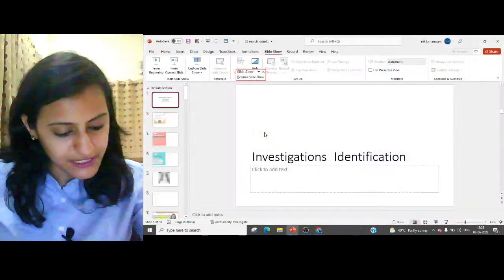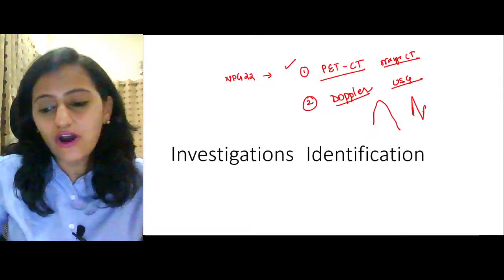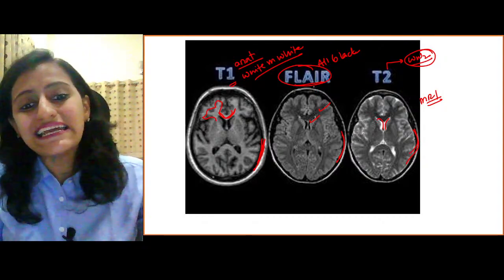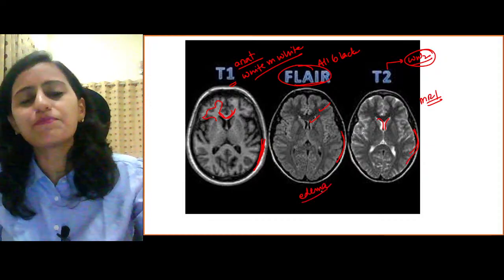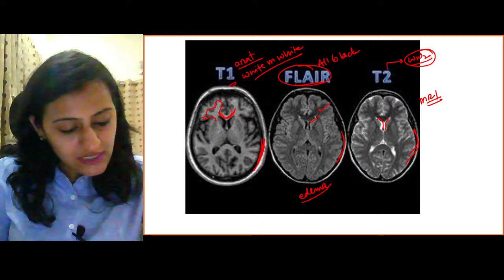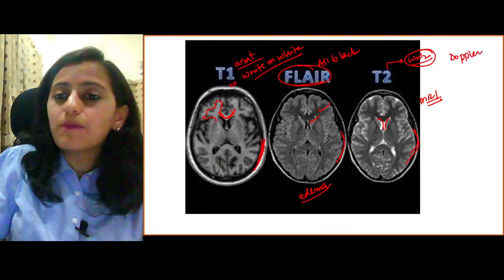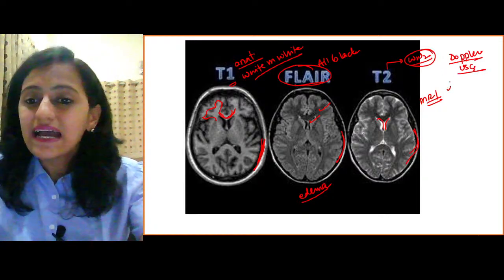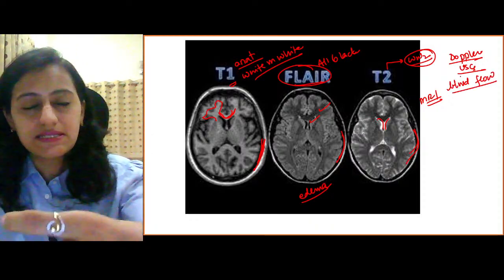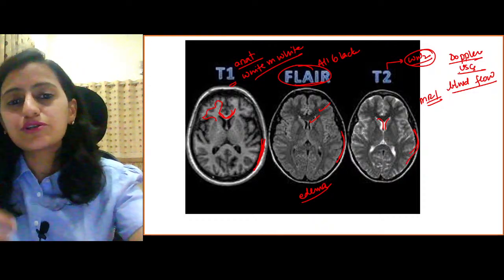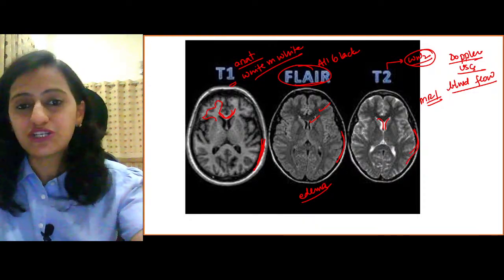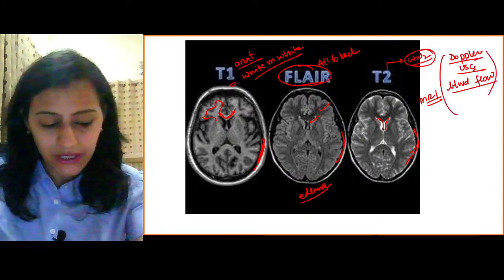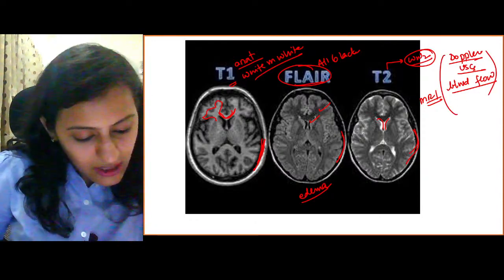FLAIR is used for picking up pathologies like edema. Doppler ultrasound has no radiation exposure and is good for looking at blood flow in vessels. In obstetric Doppler it is used for IUGR identification and to check for arterial narrowing; velocity can be measured to assess blood flow.